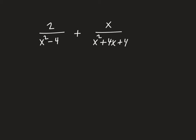Let's do another example: 2 over (x squared minus 4) plus x over (x squared plus 4x plus 4). Again, we want to get the denominators to be the same, so if they're factorable let's factor them. x squared minus 4 is the difference of perfect squares: (x plus 2)(x minus 2). And x squared plus 4x plus 4 — is that factorable? It actually is: there are factors of 4 that add to 4, so it equals (x plus 2)(x plus 2). Now let's think about the least common multiple. The right denominator has two factors of x plus 2; the left had only one. When taking the least common multiple, you use the one that has more.